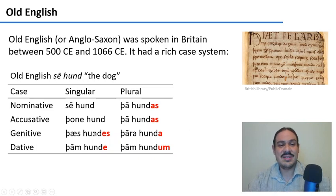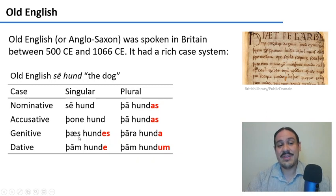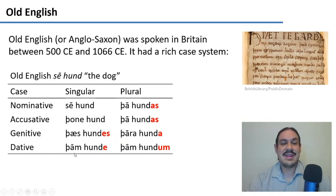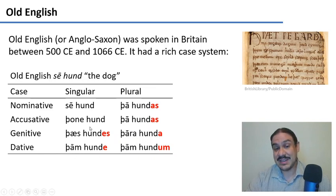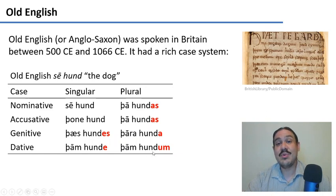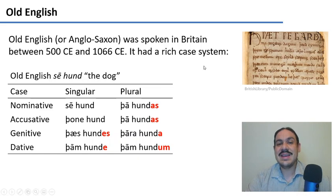For example, 'hund' (dog) would be 'se hund' in the nominative, 'þone hund' in the accusative, 'þæs hundes' in the genitive meaning 'of the dog,' and 'þæm hunde' for 'to the dog' in the dative — that's just the singular. The plural was different too: 'þæm hundum' for 'the dogs.' Old English had much more morphological complexity and looked more like German.